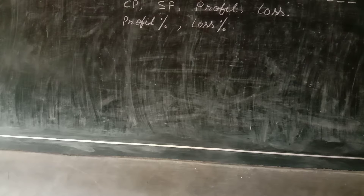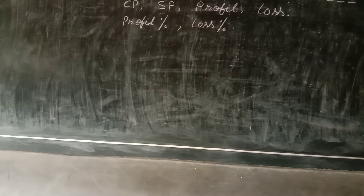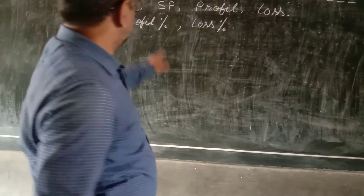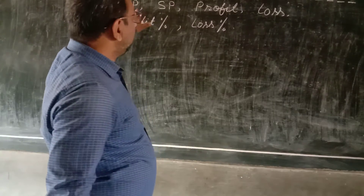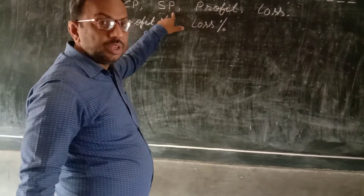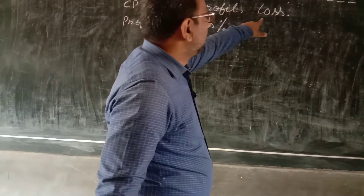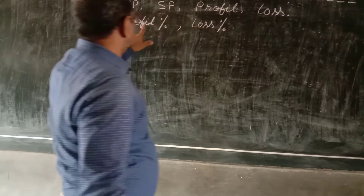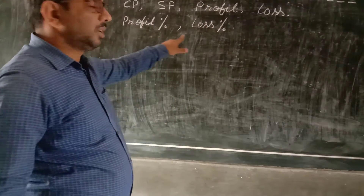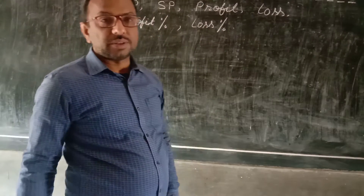In profit and loss, we have a few components. Those components are CP, SP, Profit, Loss, Profit Percent, and Loss Percent.